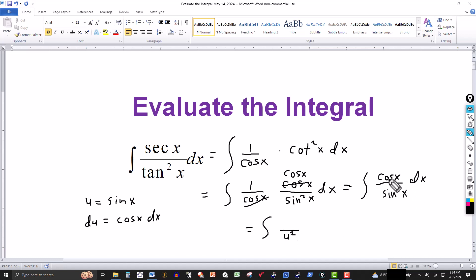Notice in the numerator I have cosine of x dx. And here on the left side, the substitution, I have cosine of x dx, that's du, so I can just replace cosine of x dx by du. Now I have a basic integral involving the variable u.